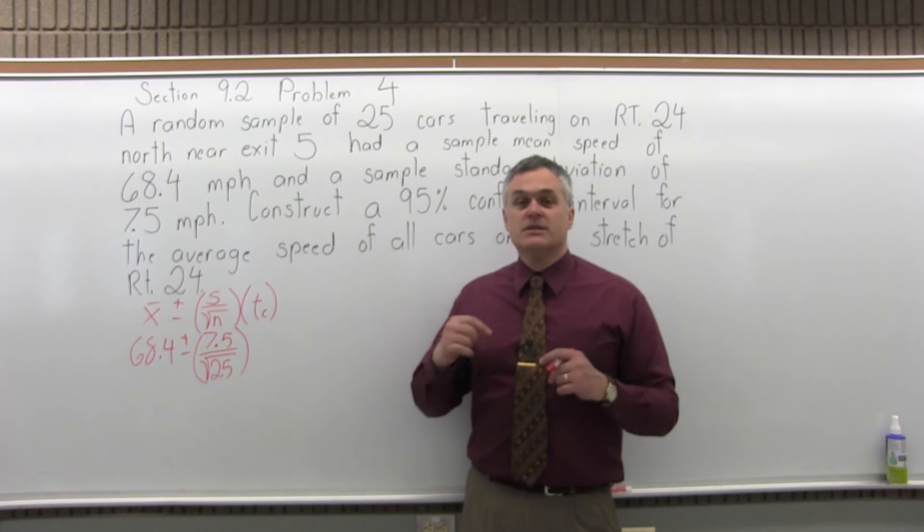And now t sub c is the confidence coefficient. And with the t we pull this out of the student's t distribution, which is attached at the end of this homework assignment. So for t sub c, we have to find the correct column and the correct row of that chart and see where they intersect. So the column is determined by 1 minus the level of confidence as a decimal over 2. That's how we determine the column of the chart that we're going to look in.